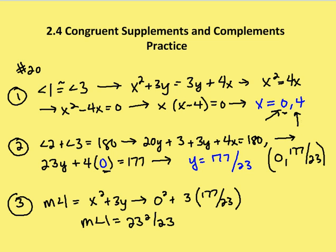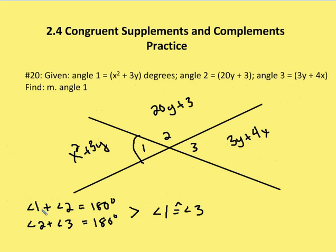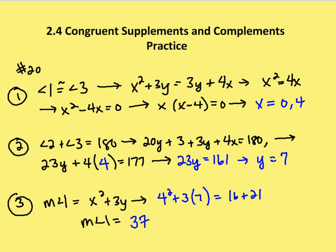Now I need to find the measure of angle 1 for x equal to 4. Going back and using the same congruence — angle 1 and 3 are congruent, and angle 2 plus 3 equals 180 — I use 4 in place of x. So I have 23y plus 4 times 4 equals 177, which gives 23y equals 161, so y equals 7.